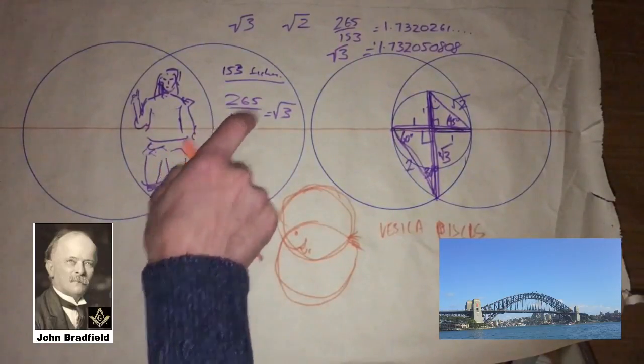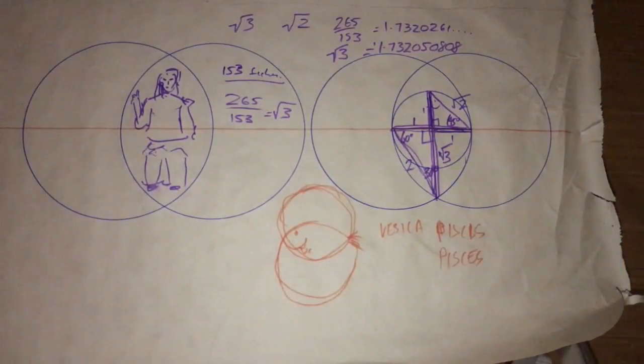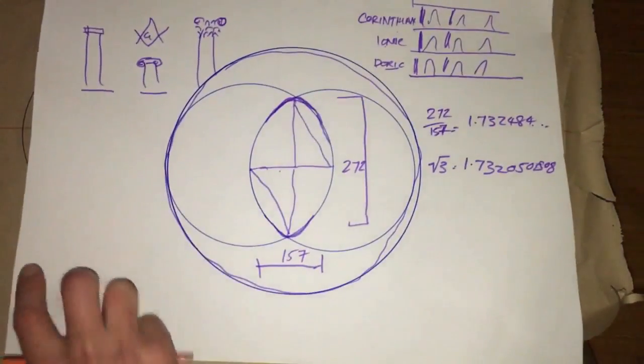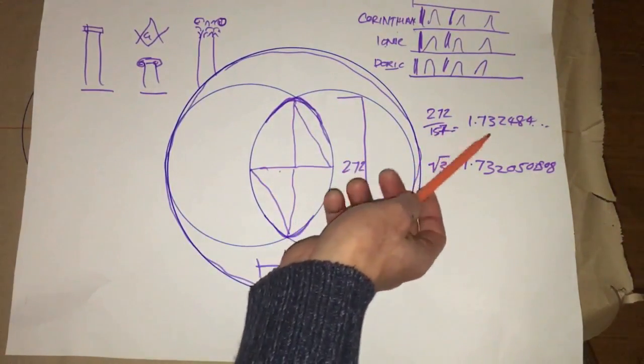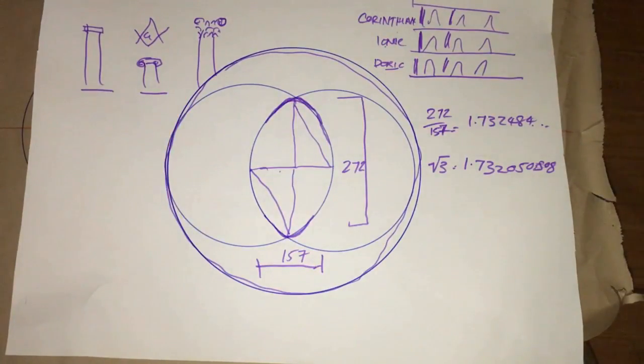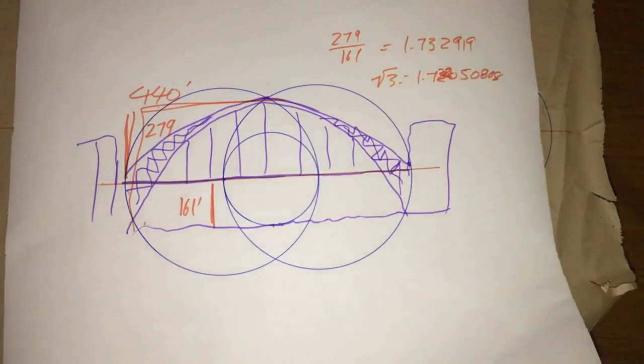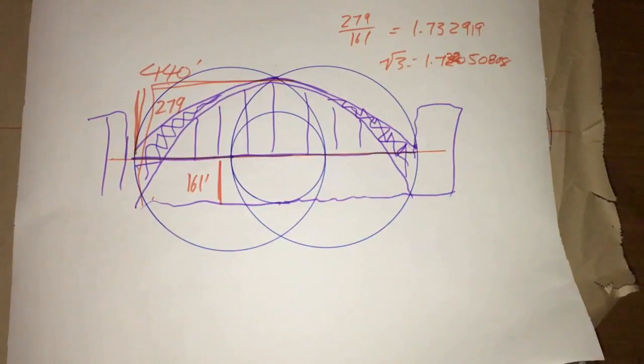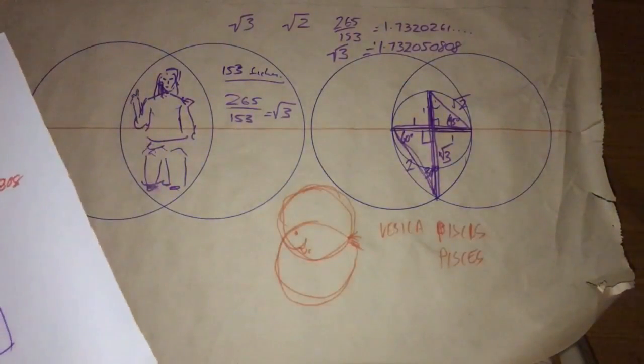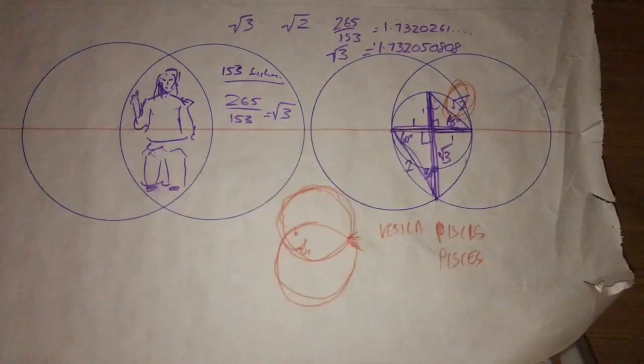279 over 161 is 1.732919. Square root of 3 is 1.7320508. Now because of the tides, this was going to move up and down and it will be passing 1.7320508. Just like 265 over 153 gives 1.732, the Coliseum vesica 272 over 157 gives 1.732, Doric, Ionic, Corinthian, the compass and square, back to the Sydney Harbour Bridge and that's the square root of 3.